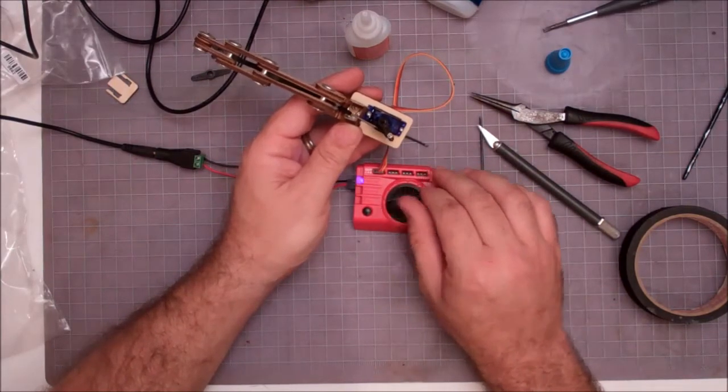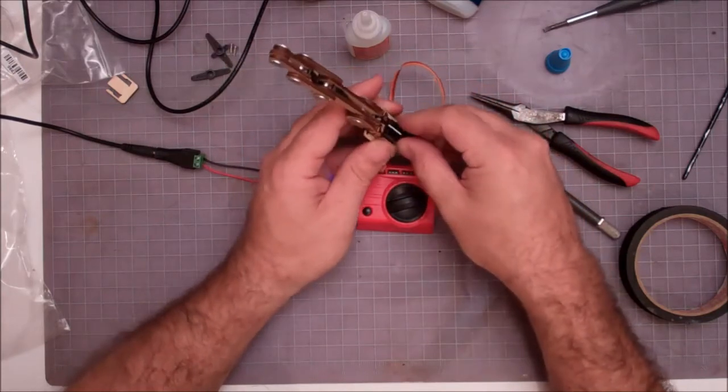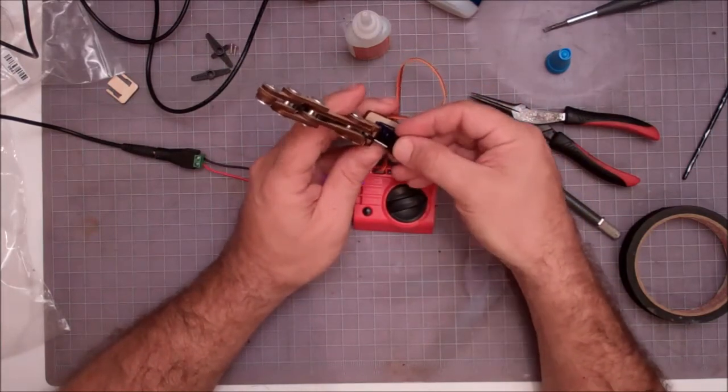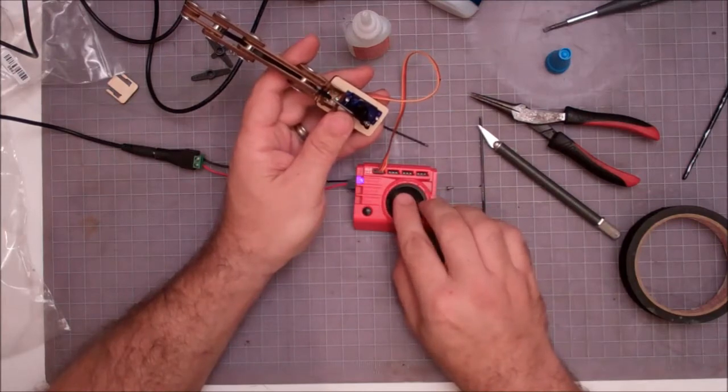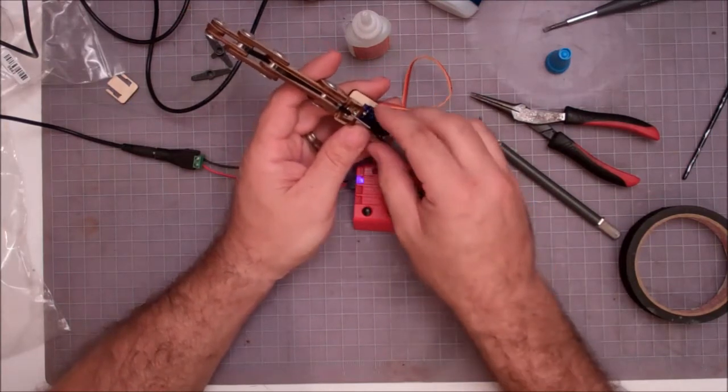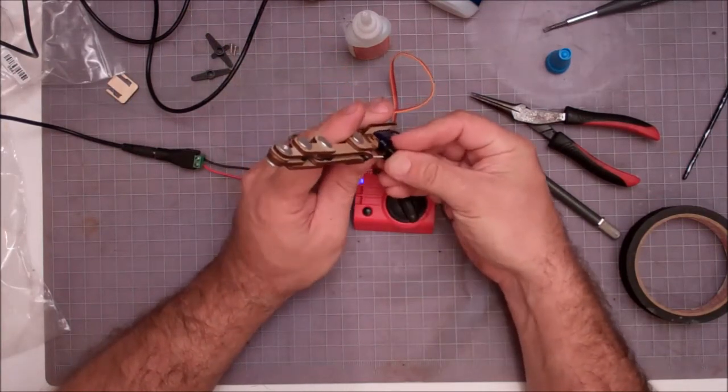So basically what I want to do is bring that down and I want it to be, I want it to basically at full rotation in that direction. I want that finger to be fairly straight.